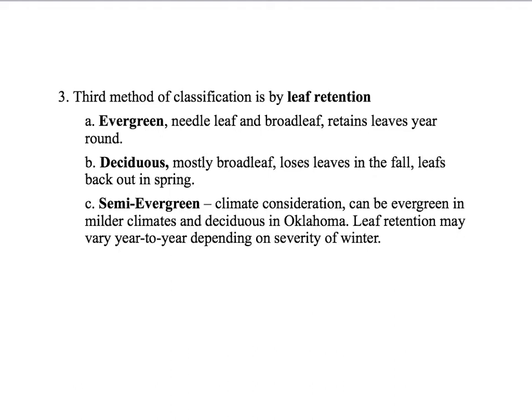Another general method of classification is by leaf retention. We'll refer to plants many times as evergreen or deciduous — the two big groups. Evergreen means that the plant retains its leaves year-round. They do replace leaves but they don't have a big drop like in the fall the way deciduous plants do. Evergreens have two main groups: needle leaf and broadleaf. The broadleaf evergreens have more in common with most deciduous plants, but they'll keep their leaves all year long just like the needle leaf plants do. Deciduous is what we're studying in this class — mostly broadleaf — and they lose their leaves in the fall. The woody part of the plant remains alive but dormant, and then the plant leaves out each spring.